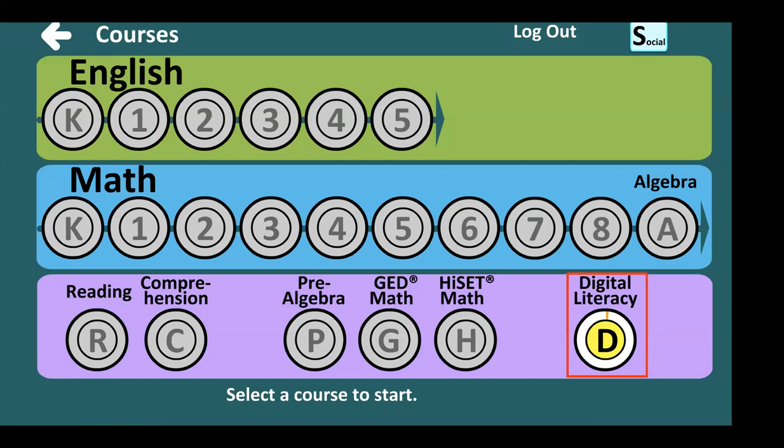If a learner starts with digital literacy but then wants to take math, they can click on any grayed-out icon to activate additional courses. You can show all 60 lessons and add a course at any time. This is what really helps facilitate binge learning — you might be working on math toward your HiSET exam, but after 10 lessons you want a break, so you work on some English or digital literacy lessons, then go back to math. It's important that learners can work on multiple courses and find out which ones work for them.